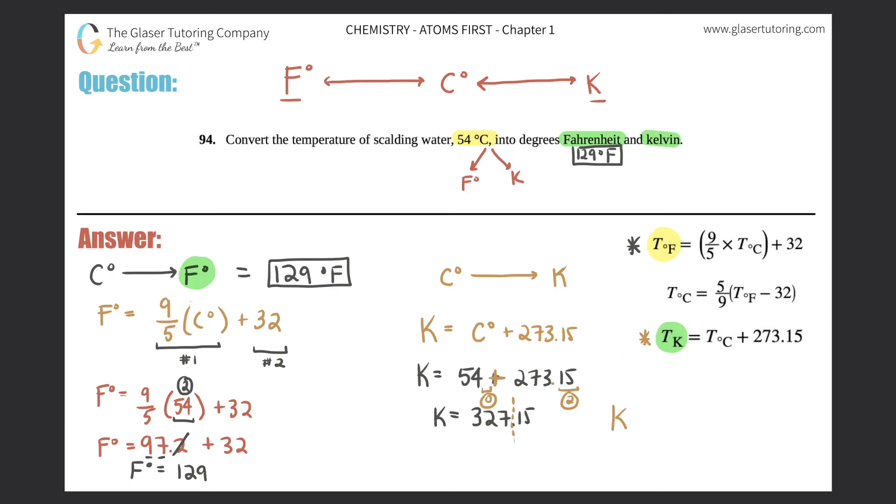So this, your Kelvin is equal to 327. That would be your answer for the Kelvin temperature. So that goes over here, 327 Kelvin. Box that off. So those are your two different temperatures that are equal to 54 degrees Celsius. It's either going to be 129 degrees Fahrenheit or 327 degrees Kelvin.